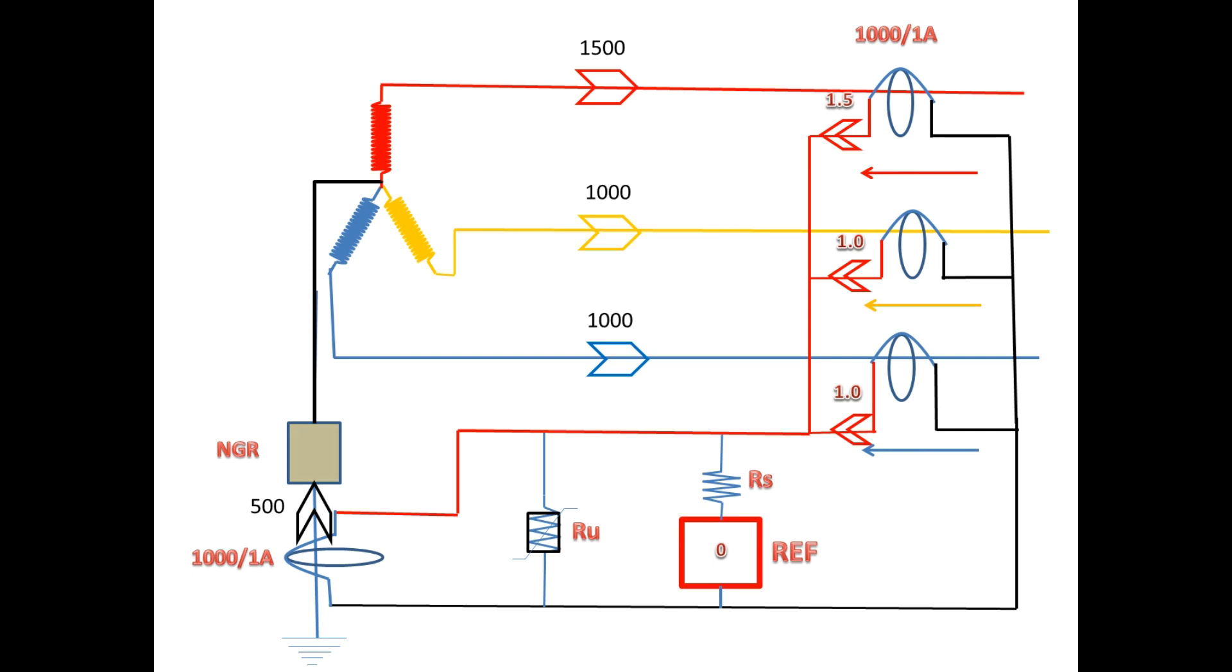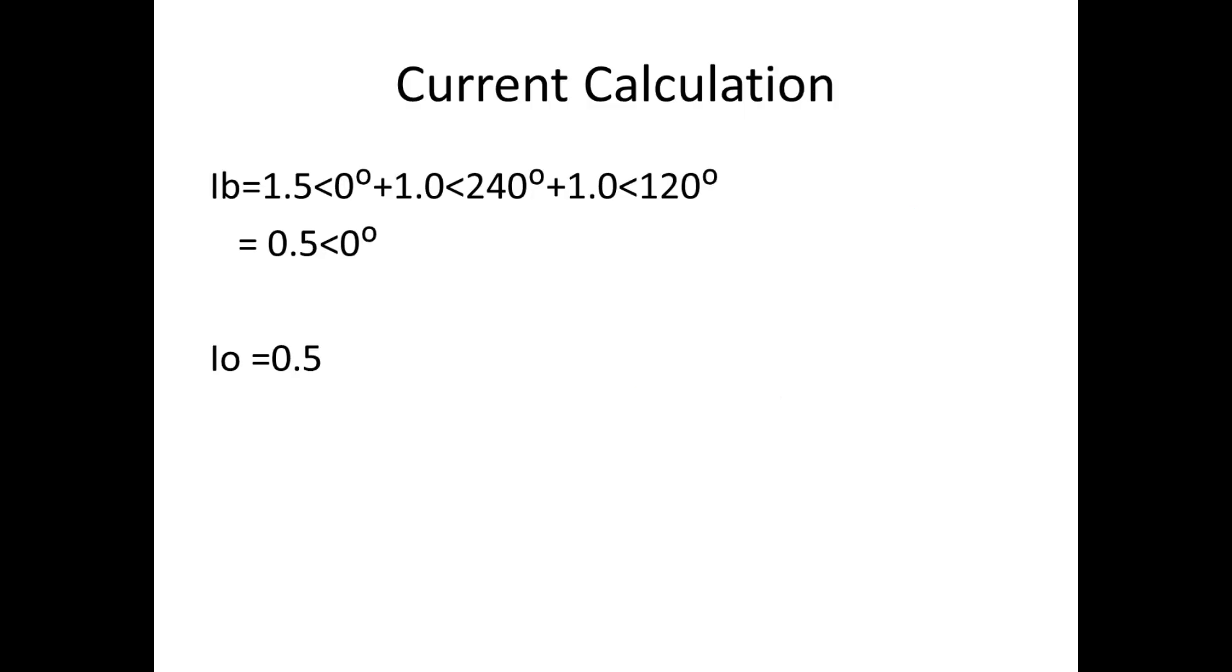The current flow will be in this direction. For the neutral phase, we get 0.5 amps on secondary and the current flows in this direction. Now for current calculation: after adding all three phase currents, we get IB as 0.5 amps at angle 0. Based on this angle, the current flow direction is decided.